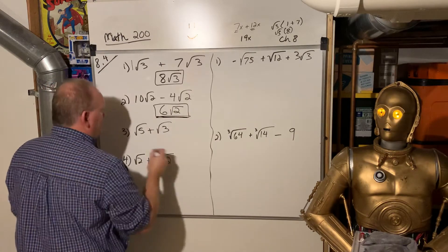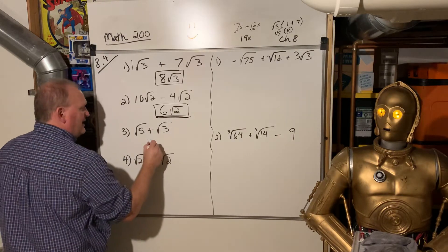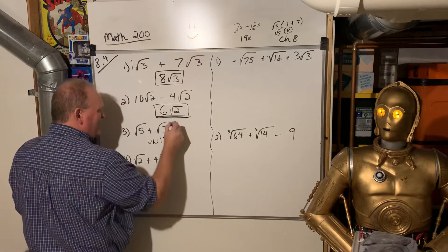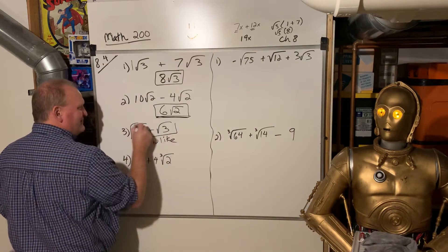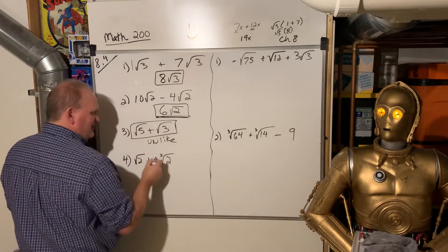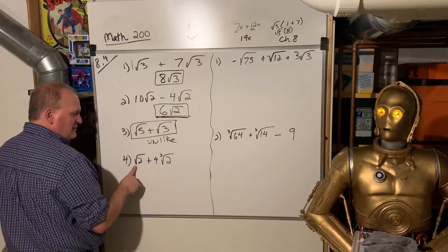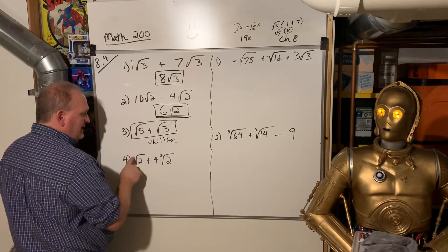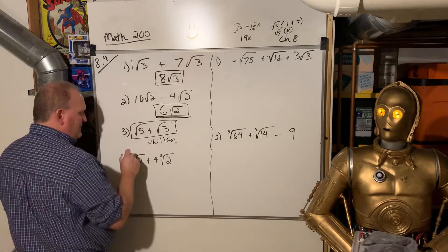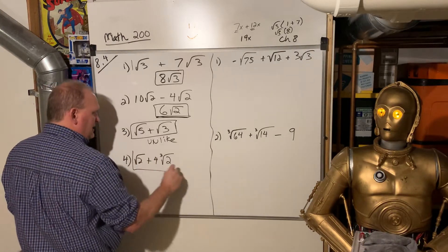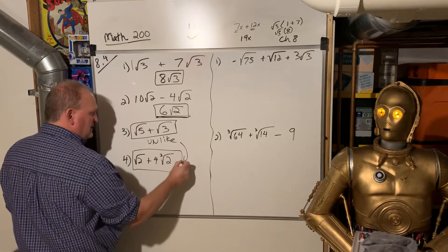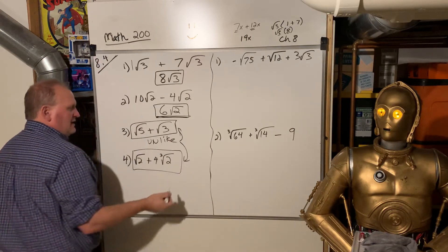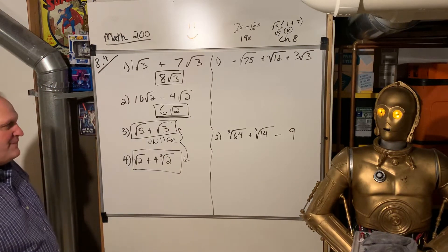These are unlike terms — that's like saying x plus y, you can't do it. These are unlike terms because it's the square root of 2 plus 4 cube roots of 2. It has to be the same index. So those are also unlike terms, and you can't add them.